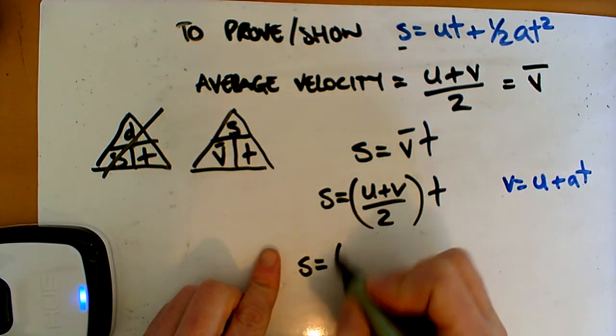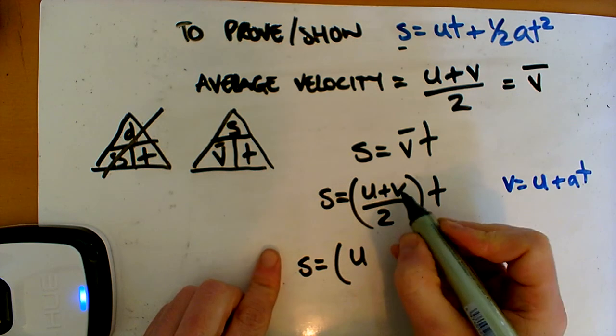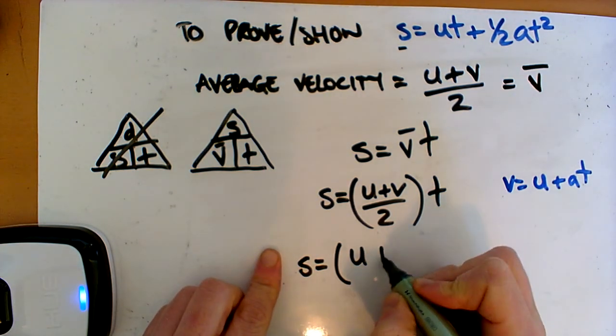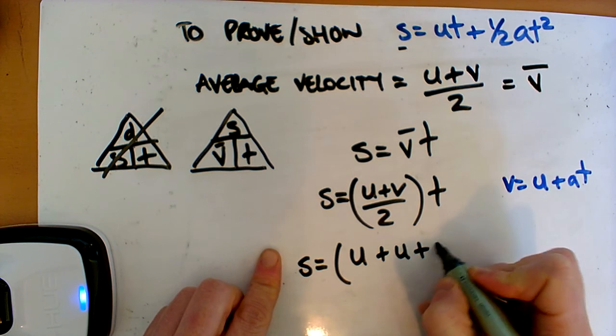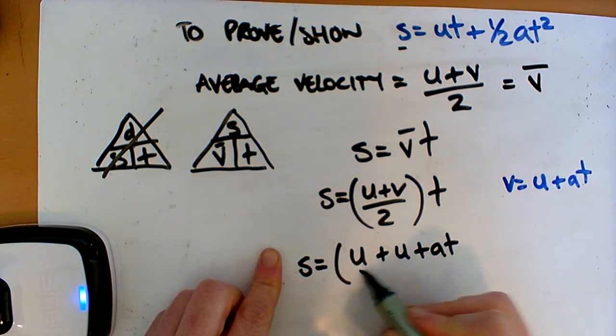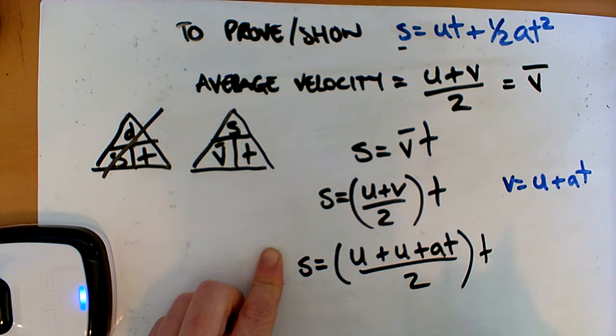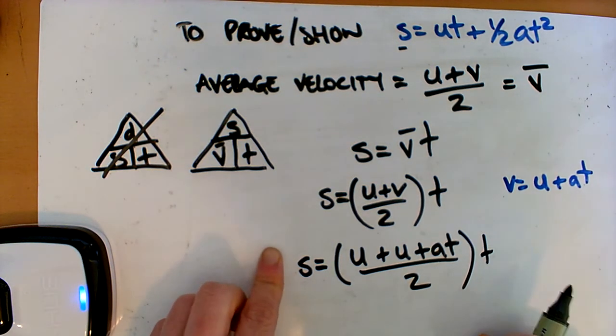So we have now S is equal to, we still have our bracket, U. Now instead of V, we're going to put this in. So it's plus U plus AT. Okay, and that's all over 2. And then this T is still here because we haven't done anything with that yet. Okay?